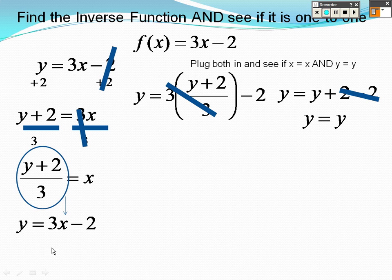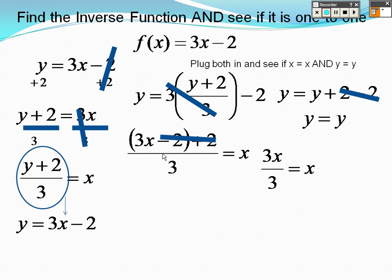Then I'm going to take this and plug that in to here, which is what I'm doing. So it's 3x minus 2 plus 2 over 3. Negative 2 plus 2, so I get 3x over 3 equals x, divide by 3. I get x equals x. Since that works on both, it's correct.